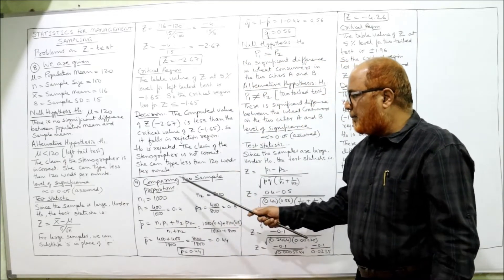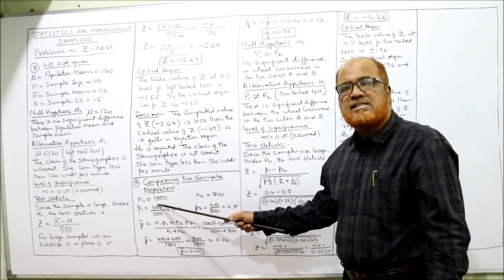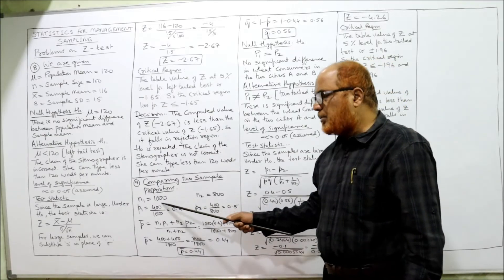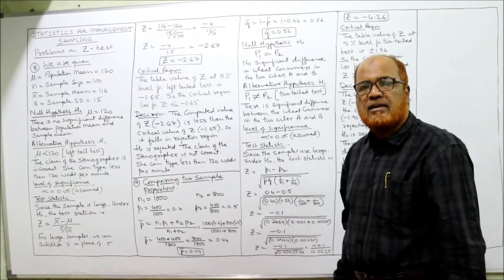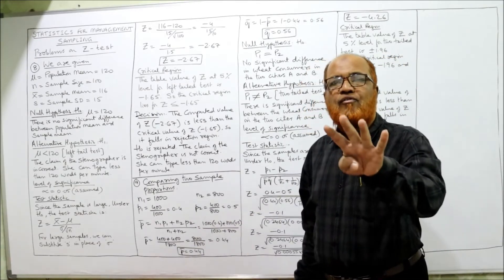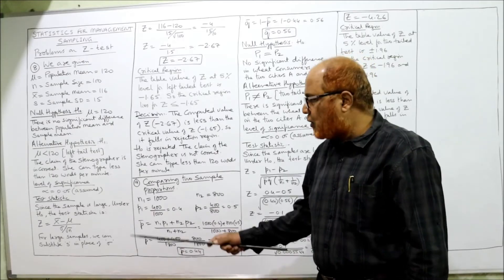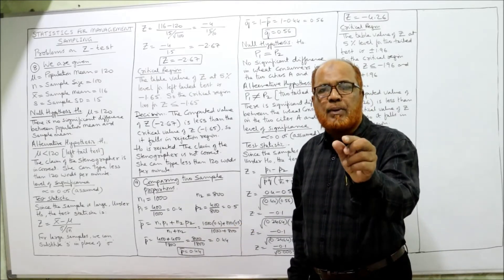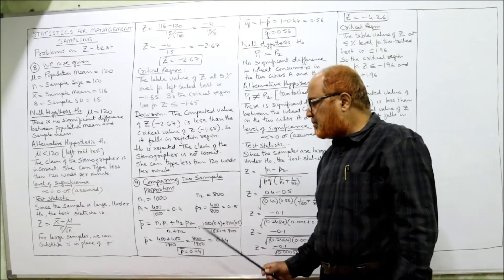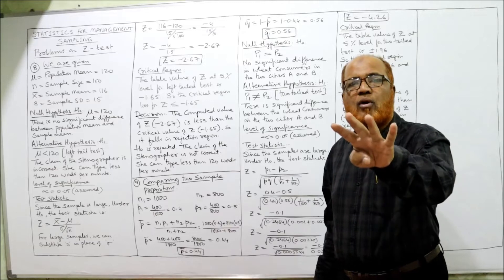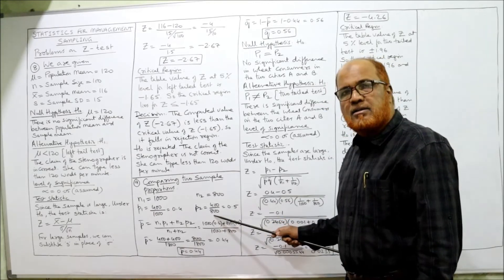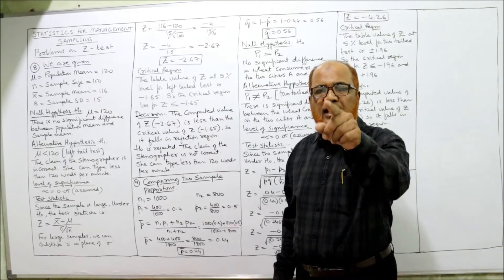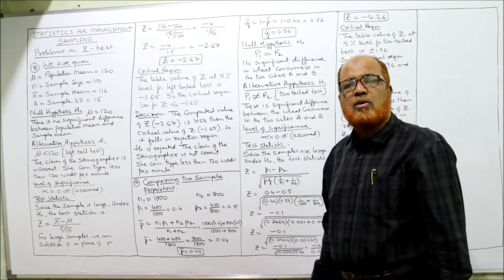N1 is the sample size of the first sample and N2 is the sample size of the second sample. N1 is 1000 people in town A, N2 is 800 people in town B. Out of 1000, 400 are consumers of wheat, so proportion P1 equals 400 divided by 1000, which is 0.4. So 0.4 is the proportion of wheat consumers in town A, and 0.5 is the proportion of wheat consumers in town B.